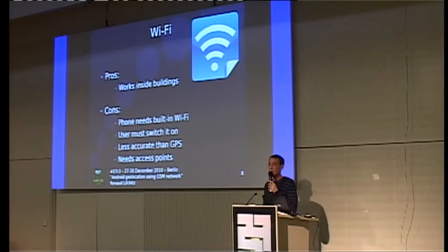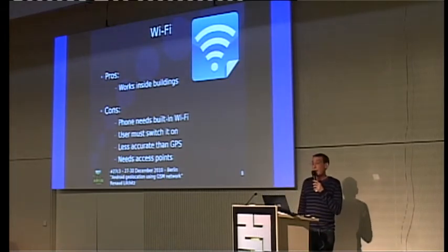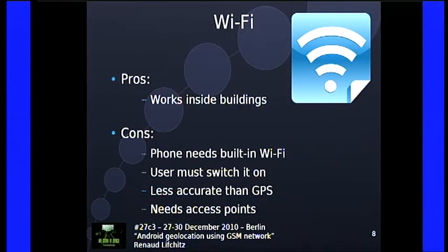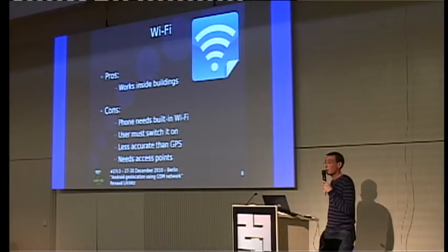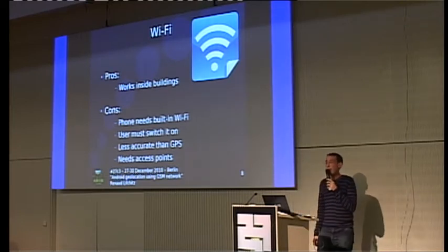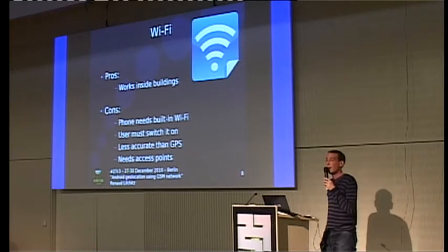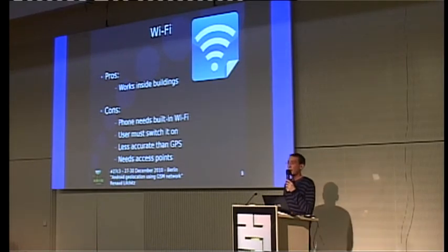Another way to geolocate yourself is Wi-Fi. Wi-Fi works inside buildings, so you can locate yourself at work or at home. But you need Wi-Fi on your phone, you need to switch it on, and it's far less accurate than GPS. The coverage for a Wi-Fi access point is about 300 meters. You also need access points nearby to triangulate your position.